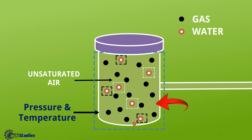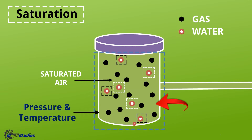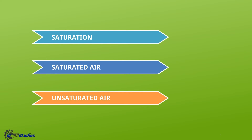Now if we put in more moisture, the air cannot hold it — the water vapor changes into water droplets and settles down. So the air cannot hold more water vapor at this pressure and temperature, and this air is called saturated air. This condition is known as saturation.